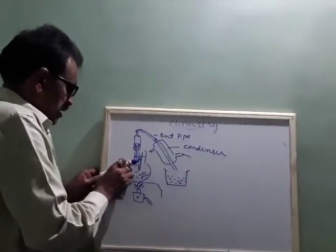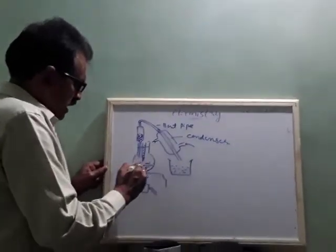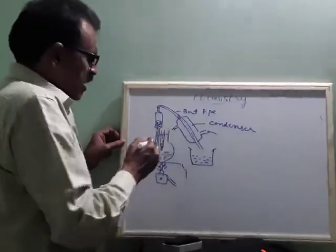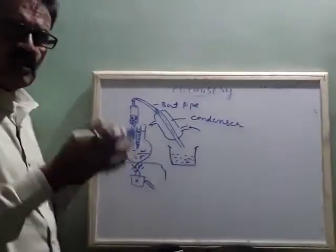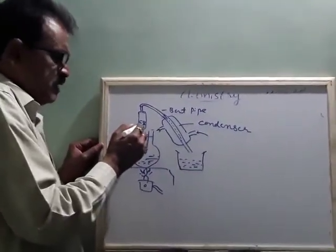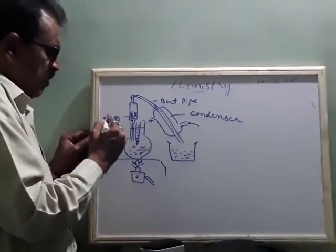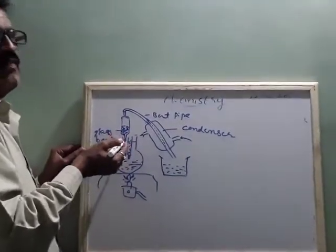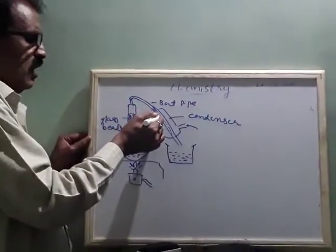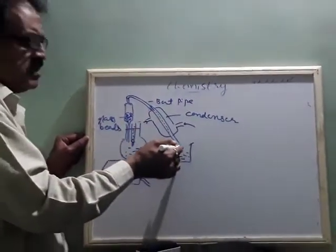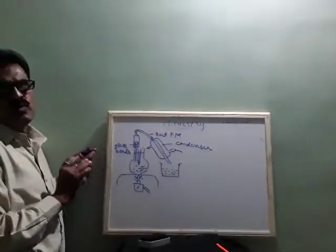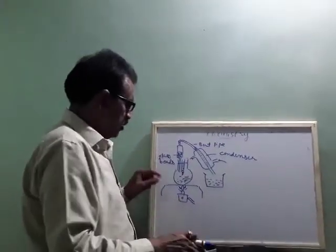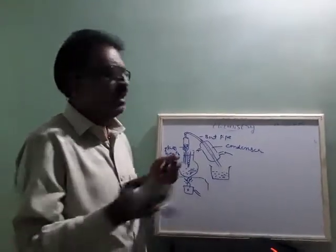By fractional distillation we separate two miscible liquids with a lesser difference in their boiling points. The liquid with the lower boiling point comes out first. The one with the higher boiling point also vaporizes, but it sticks to the glass beads in the fractionating column. Eventually it rises, undergoes condensation, and becomes liquid — and is collected separately.